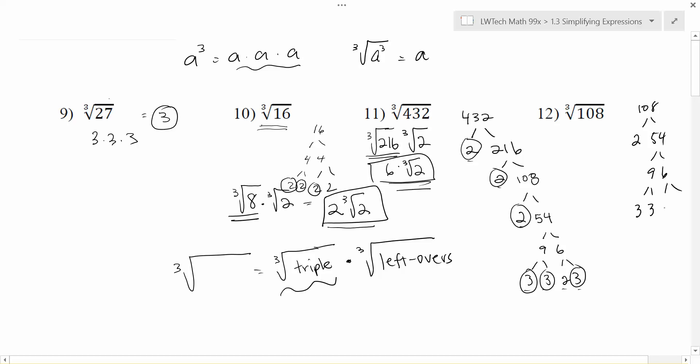9 is 3 times 3 and 6 is 2 times 3. I'm looking for any groups of 3. I have a group of three threes and then I have two twos. That's not enough. So when I do my breakdown, the three threes give me the cube root of 27, and then the two twos are left over in the second group.